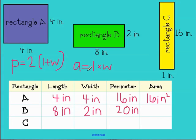And area equals length times width. So length is eight, width is two. Area equals eight times two, which is 16 inches squared.